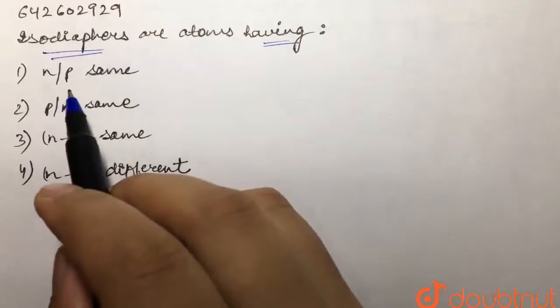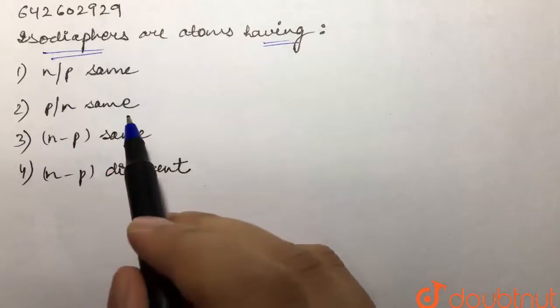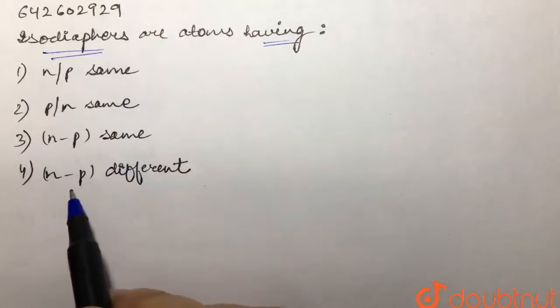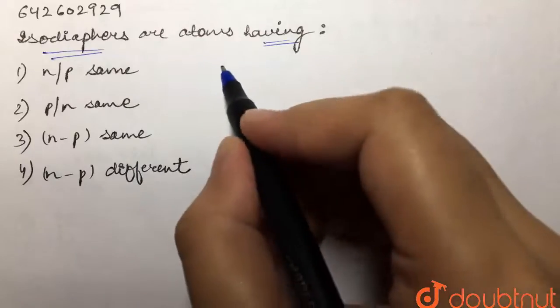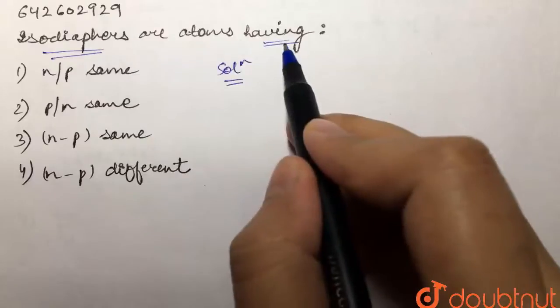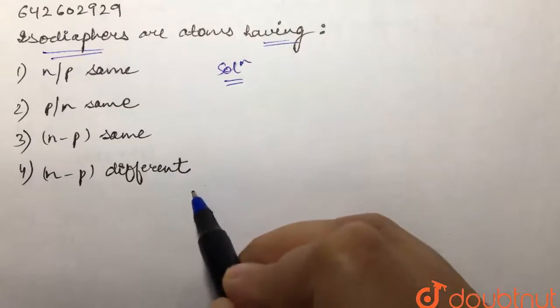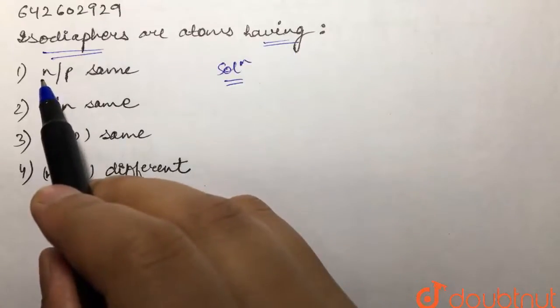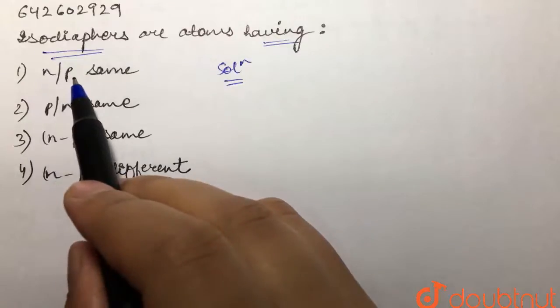n by p value same, p by n value same, n minus p same, or n minus p different. So over here we are supposed to tell the isodiaphors are the atoms that are having what of the following. N over here are the number of neutrons and p over here are the number of protons.